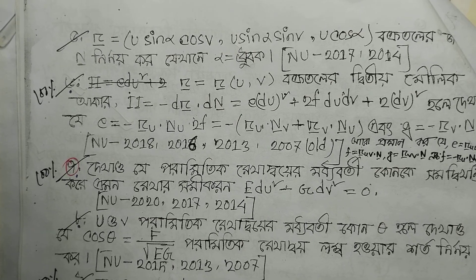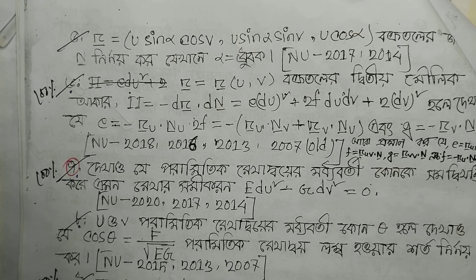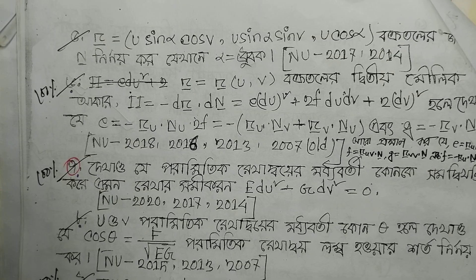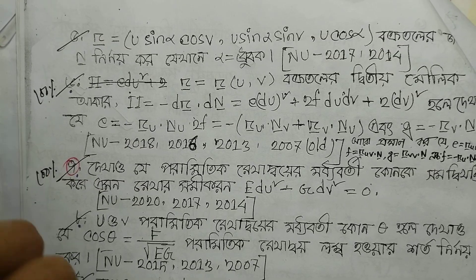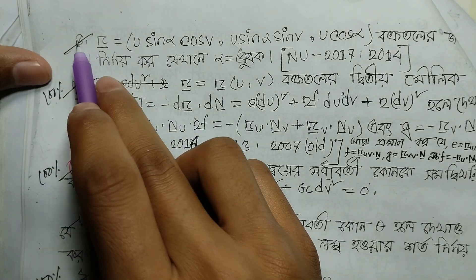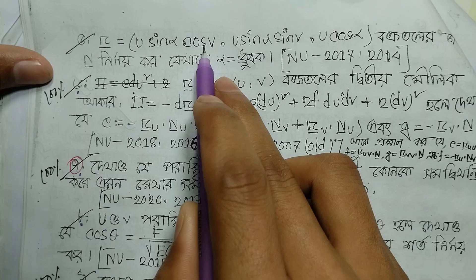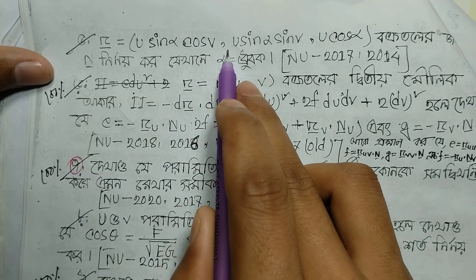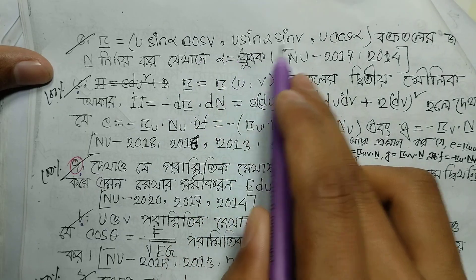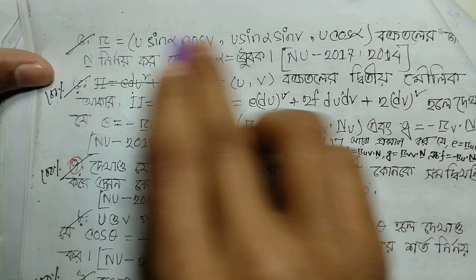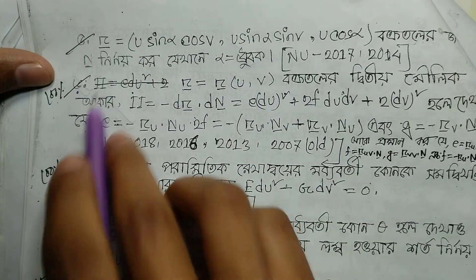Bismillahirrahmanirrahim. This is Chapter 3 of the third-year differential geometry subject. The vector r is given as r(u,v) = (u sinα cosv, u sinα sinv, u cosα).